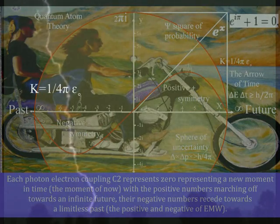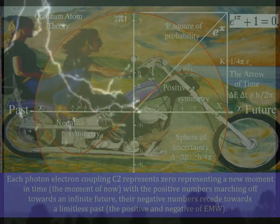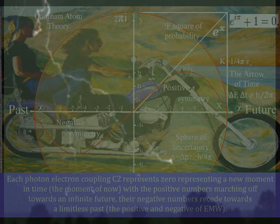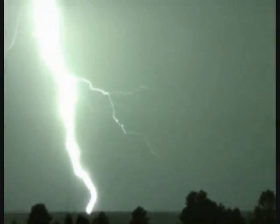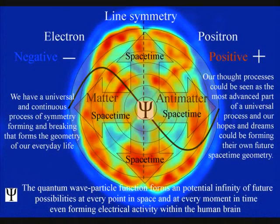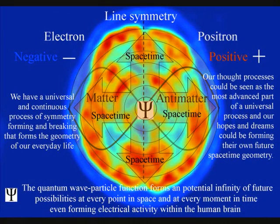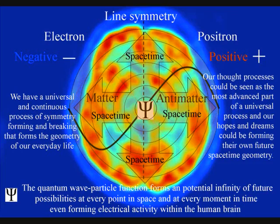In this theory, electrical potential and the individual's future potential are the same within their own reference frame. The most advanced part of this universal process is in the form of electrical activity in the brain being able to comprehend and measure this process as the flow of time with a past and uncertain future.